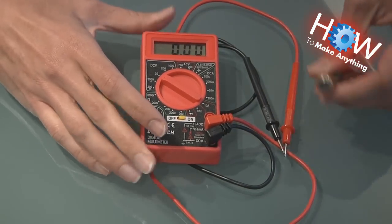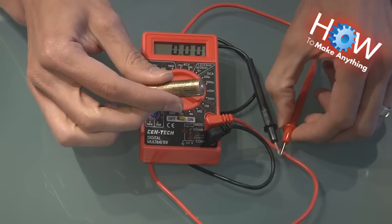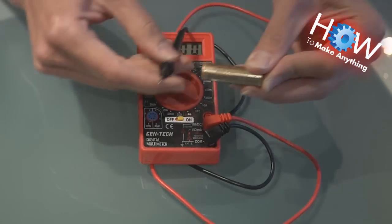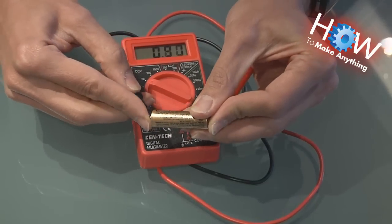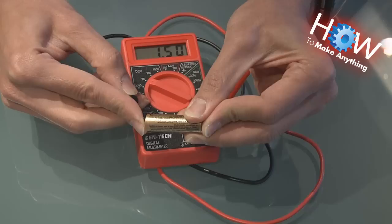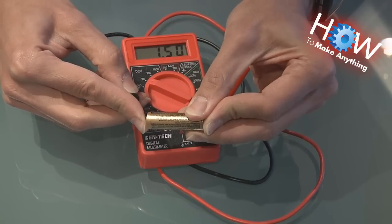And what you want to do is you just want to take a battery. Any battery will work. Take your red probe, which is always positive, just like on your car battery, and your black probe, always negative. Touch them to both sides of the battery, and you'll get your voltage reading right there. As you can see, this is exactly 1.5 volts.